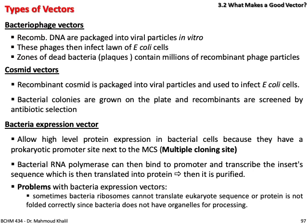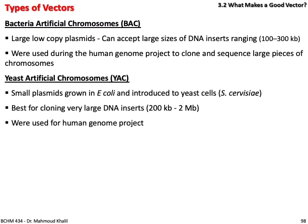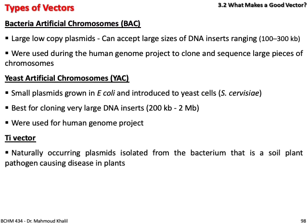Bacterial artificial chromosome (BAC): a large, low-copy chromosome plasmid that can accept large DNA inserts up to 300 kb. BACs were used during the human genome project to clone and sequence large pieces of chromosomes. Yeast artificial chromosome (YAC): a small plasmid grown in E. coli and introduced to yeast cells. YACs are best for cloning very large DNA up to 2 megabases and were also used for the human genome project.